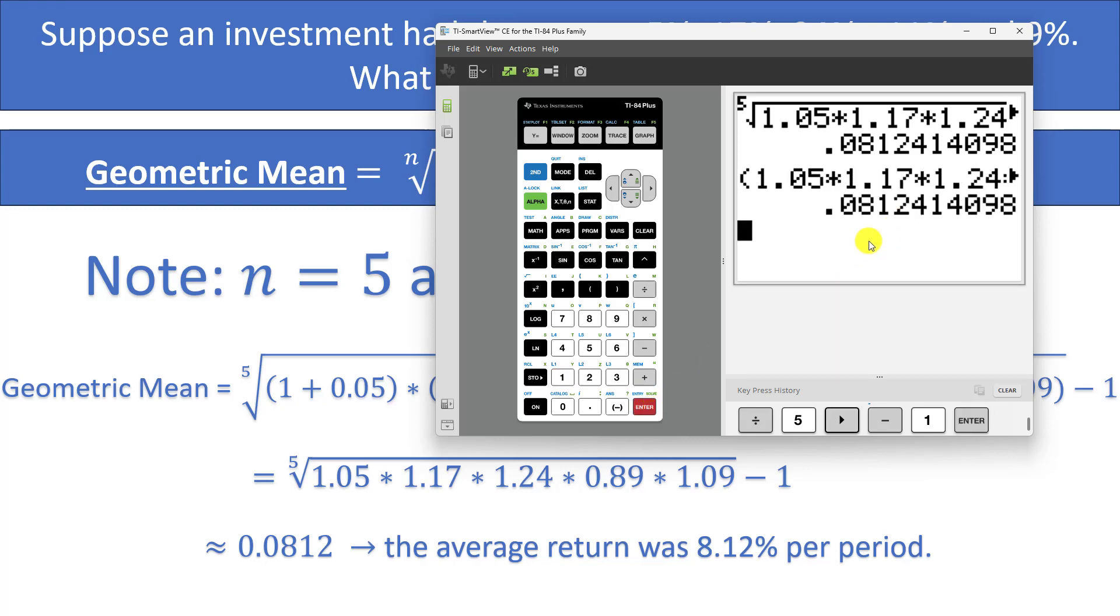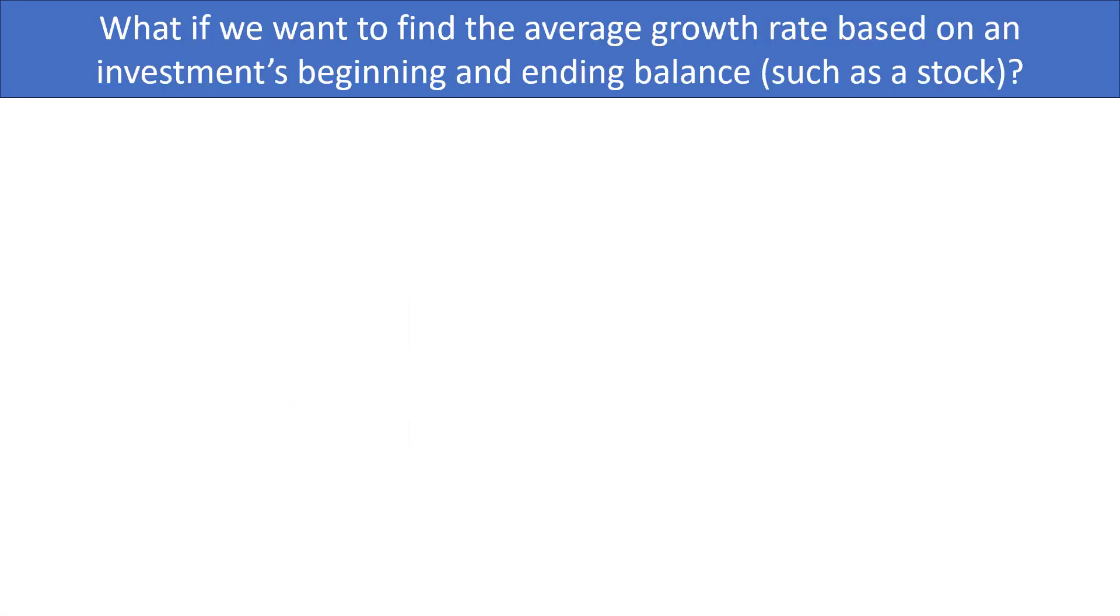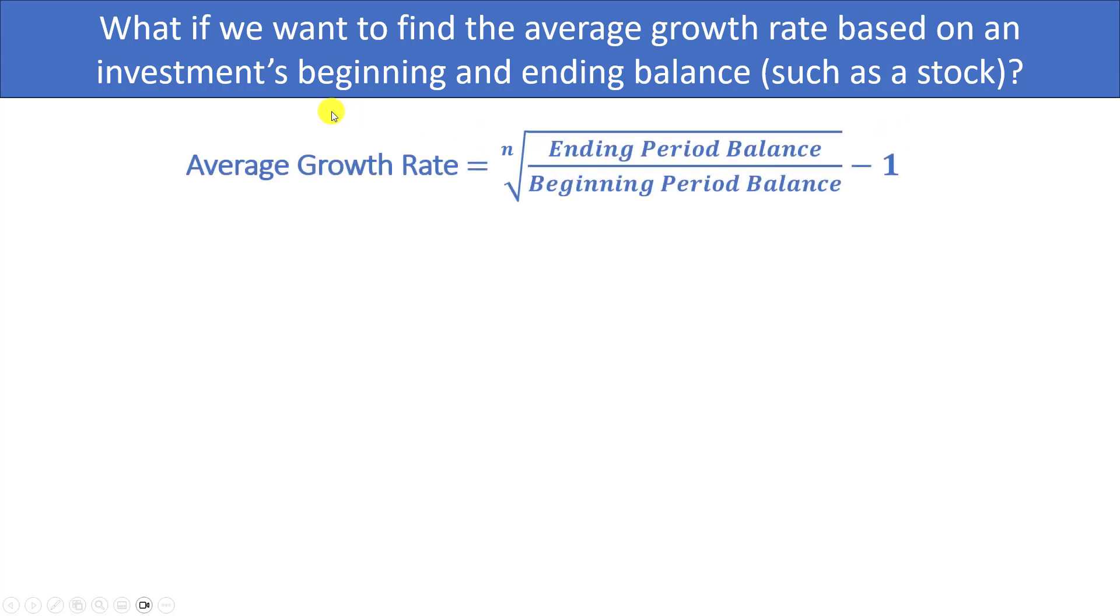What if we want to find the average growth rate based on an investment's beginning and ending balance such as a stock? Well then we can use the average growth rate formula. This would be the case where we know an investment's beginning balance and ending balance and we know how many periods are between them. We would take the nth root of the ending balance divided by the beginning balance minus 1, where n represents the number of periods which could be either months or years or whatever you have.